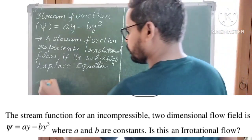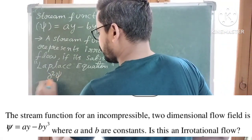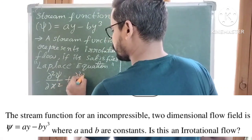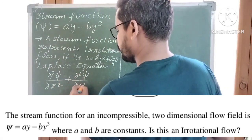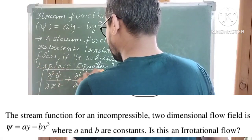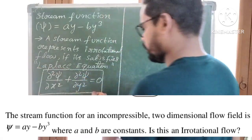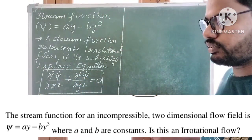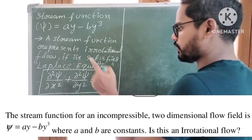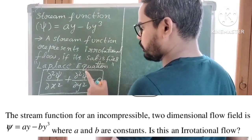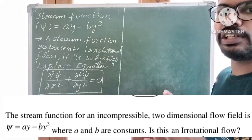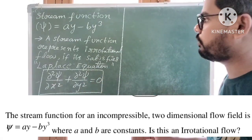So what is the Laplace equation? ∂²Ψ/∂x² plus ∂²Ψ/∂y² is equal to 0. This equation is called the Laplace equation. A stream function represents irrotational flow only if it must satisfy this equation. If this equation is satisfied, the flow is irrotational; otherwise, it is a rotational flow.